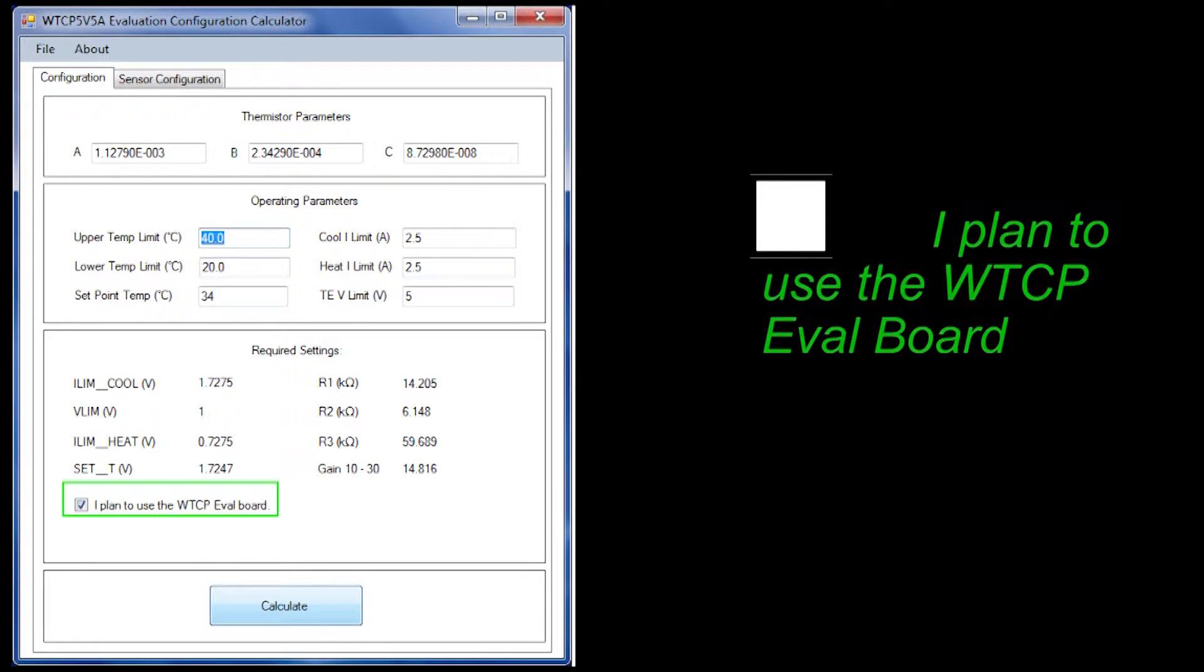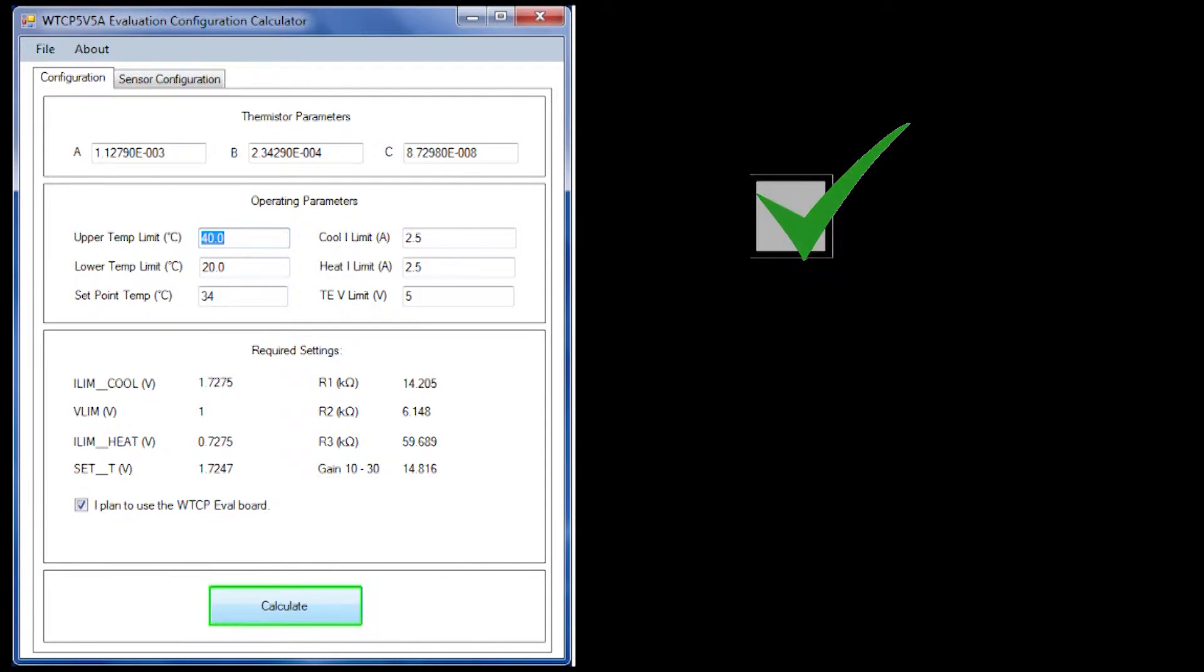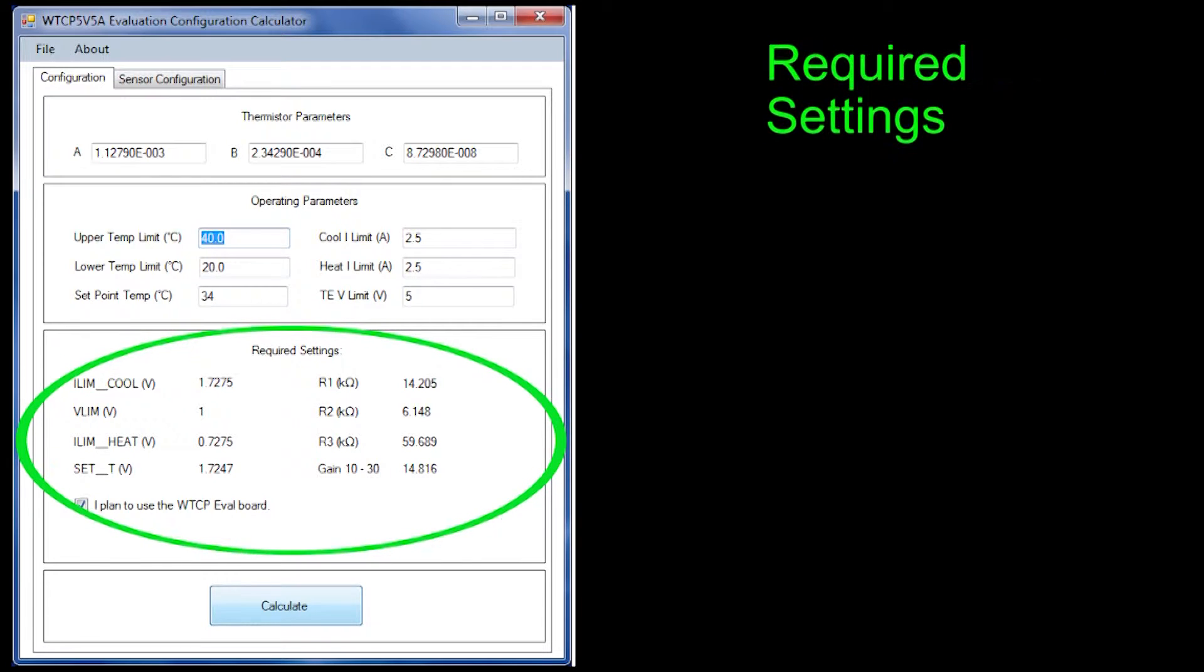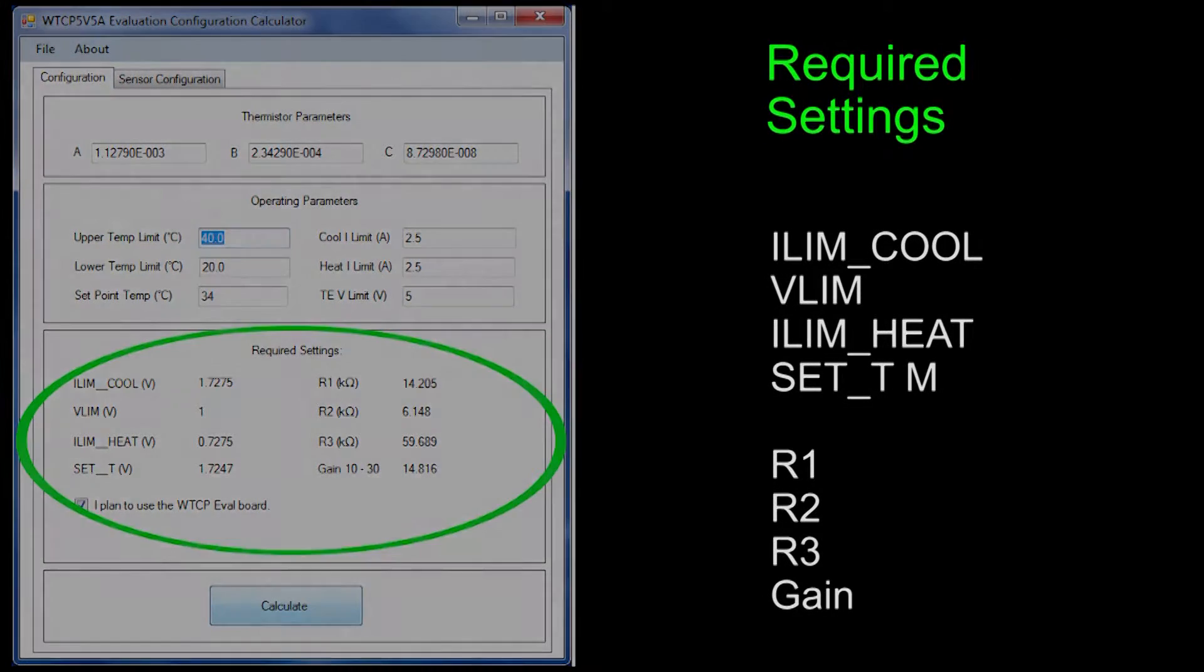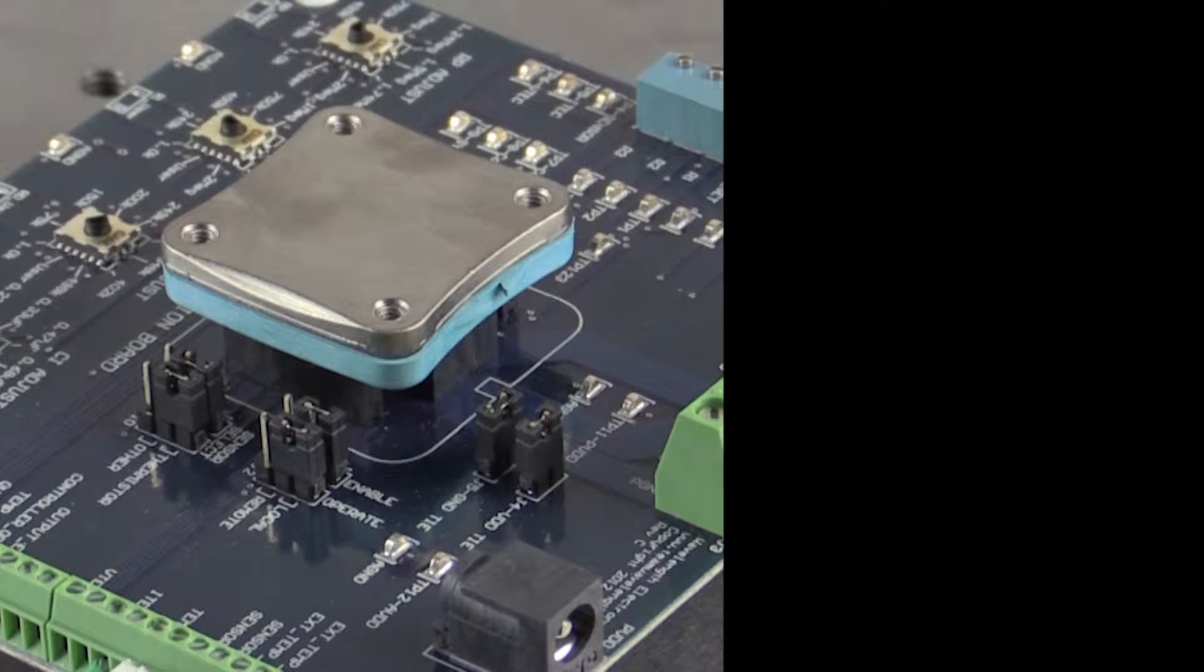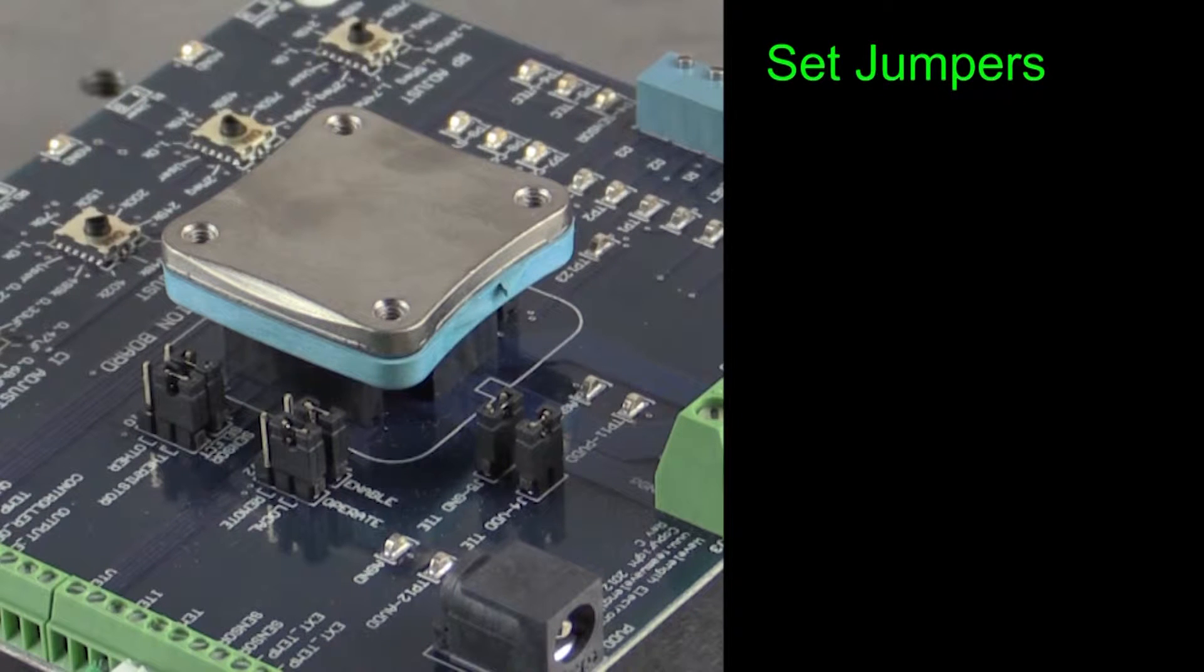Check the box I plan to use the WTCP eval board. Click Calculate to determine the starting point for setting up the evaluation board. Record these required settings values or print the page for later use. This quick start assumes the set point will be generated locally on the eval board and that it will be set up for single supply operation.